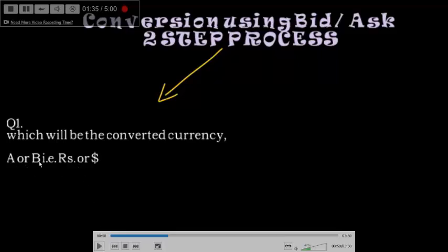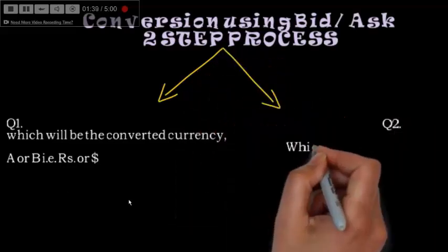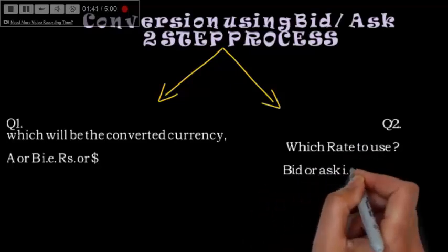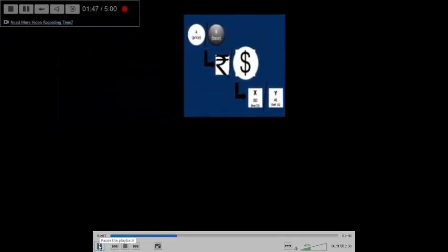That is the price currency or base currency. Which will be the resulting currency? And question number 2: which rate are we going to use, whether it is the bid rate or the ask rate.